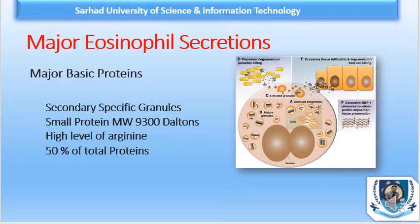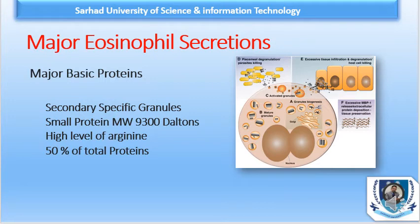The first one is MBP — Major Basic Protein. This protein is found in the electron-dense core of secondary specific granules and plays an important role in helminth destruction. MBP is a small protein with a molecular weight of 9,300 daltons. It mostly contains a high level of arginine, and its role is to destroy the cell membrane of the parasites.